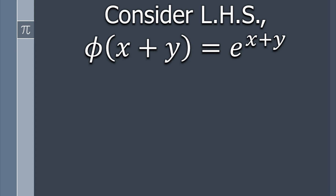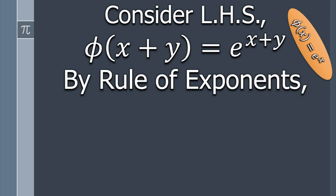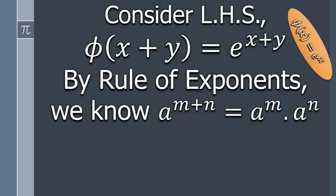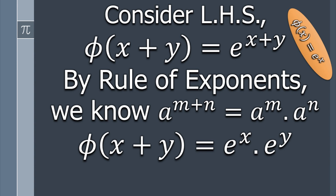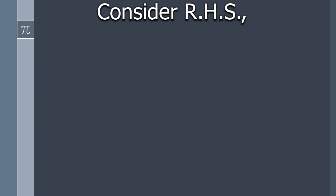Consider the left-hand side: apply φ on x + y, which gives e^(x+y) since φ(x) = eˣ. Using the exponent rule a^(m+n) = a^m × a^n, this simplifies to eˣ × e^y. We call this equation number one, as we will use it later.